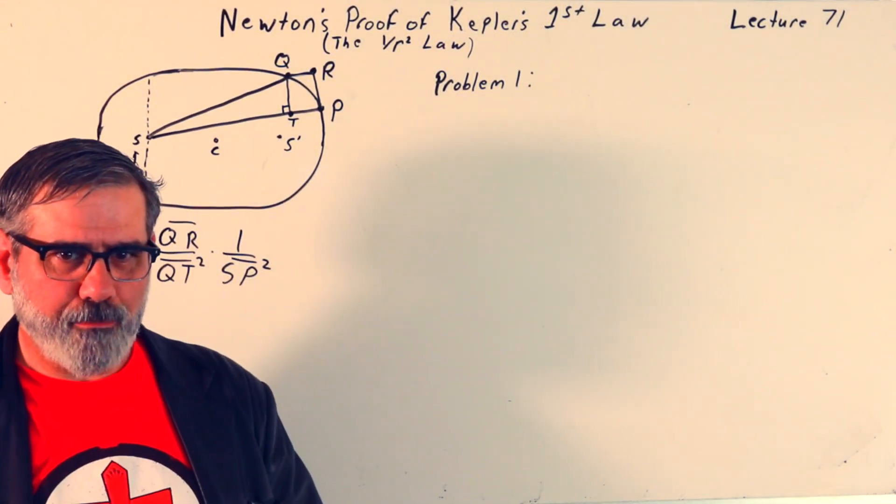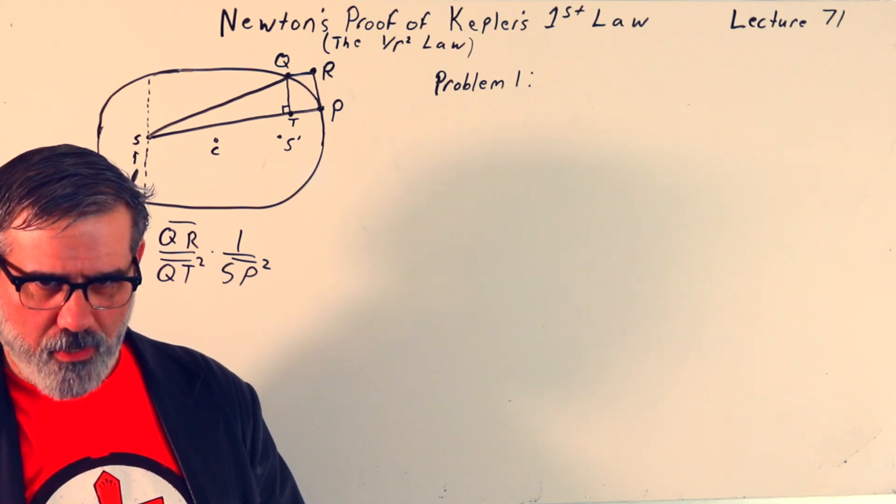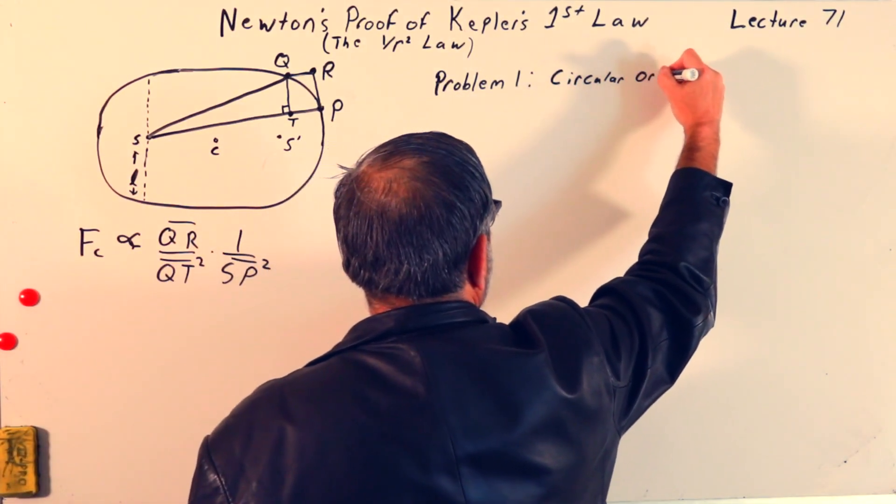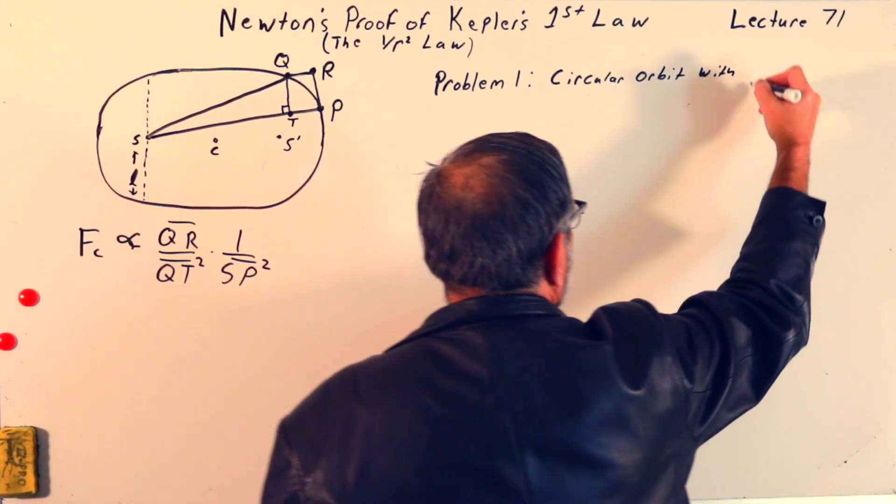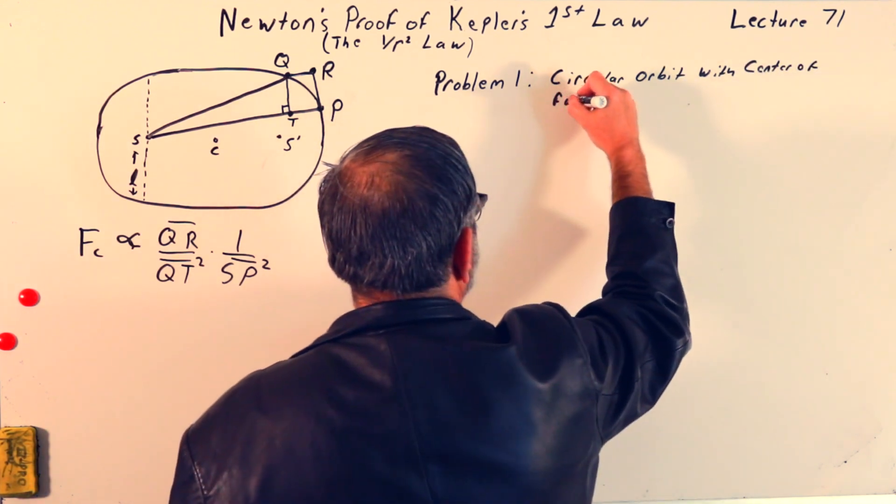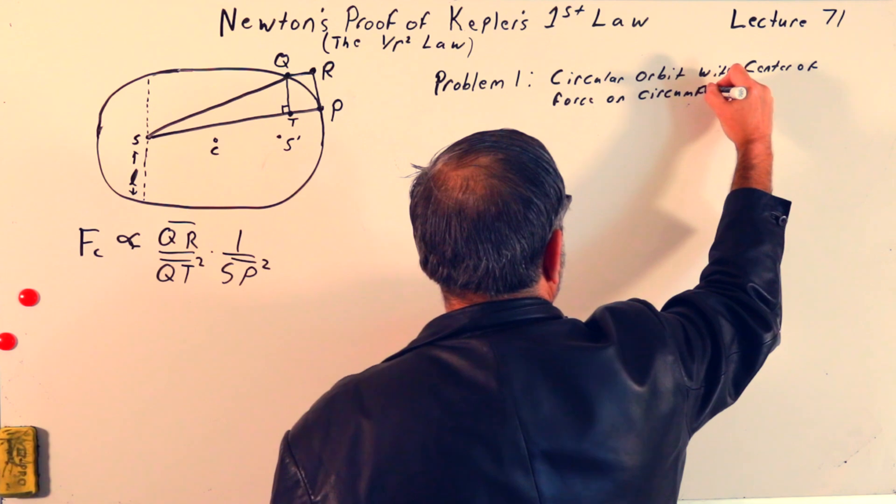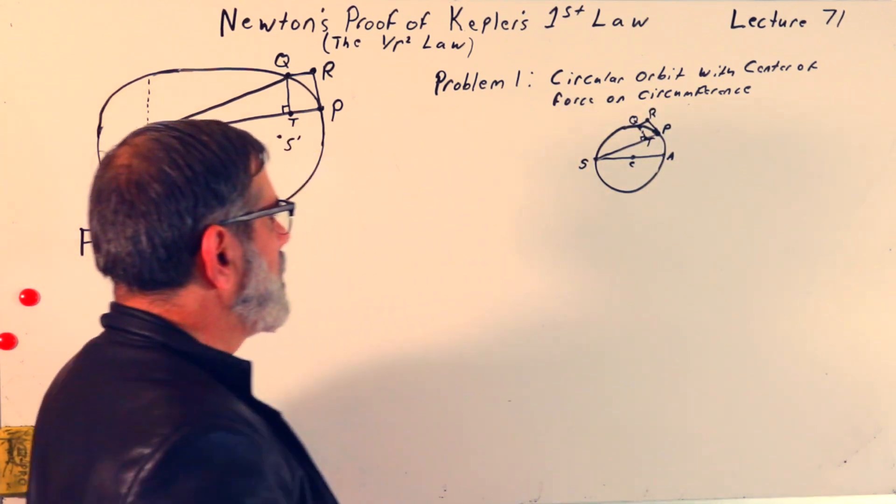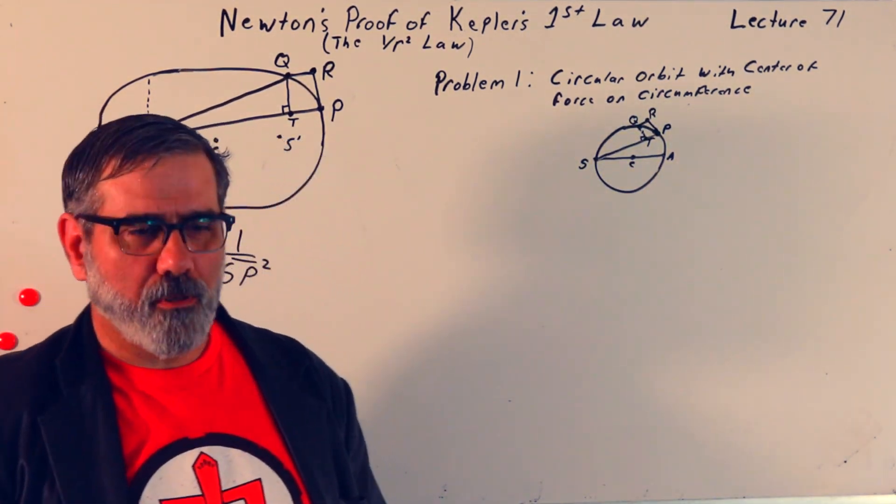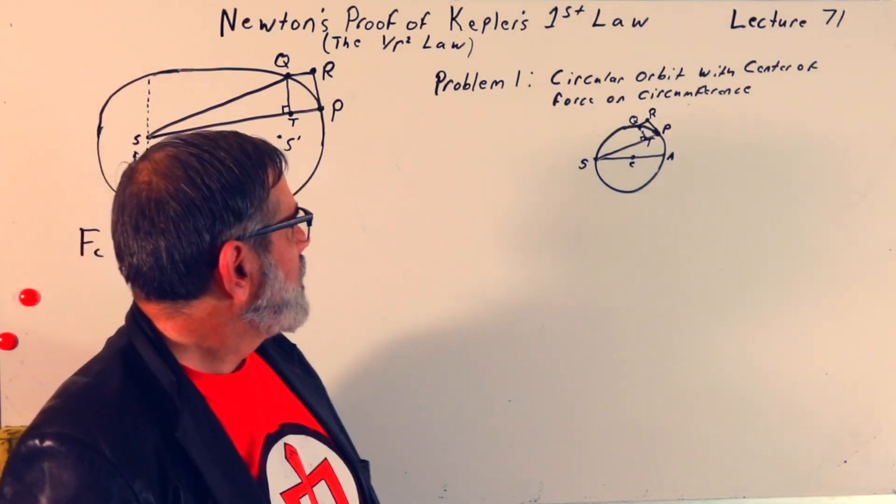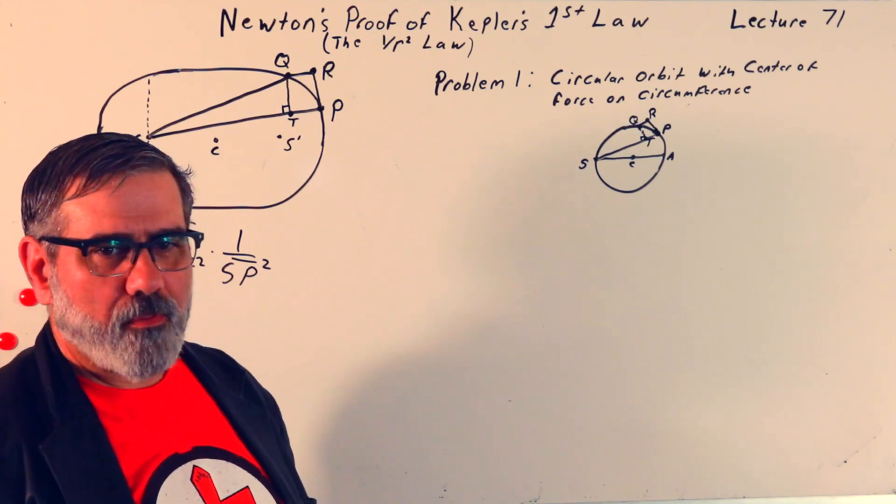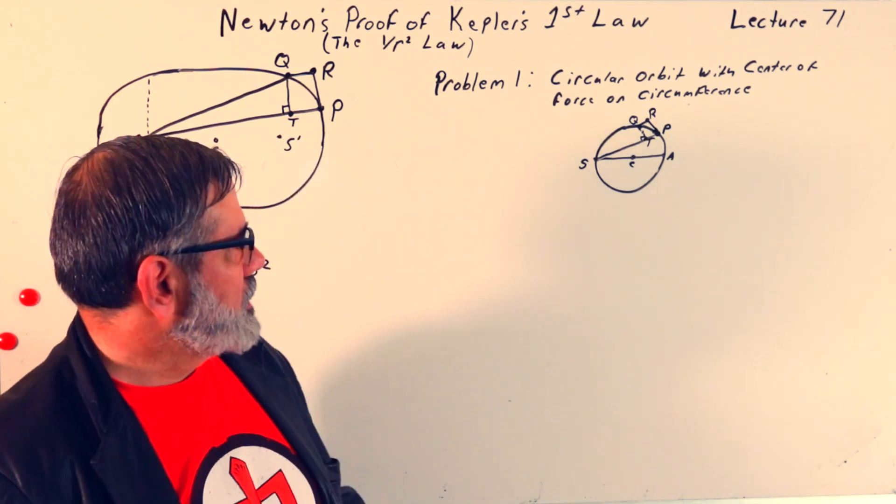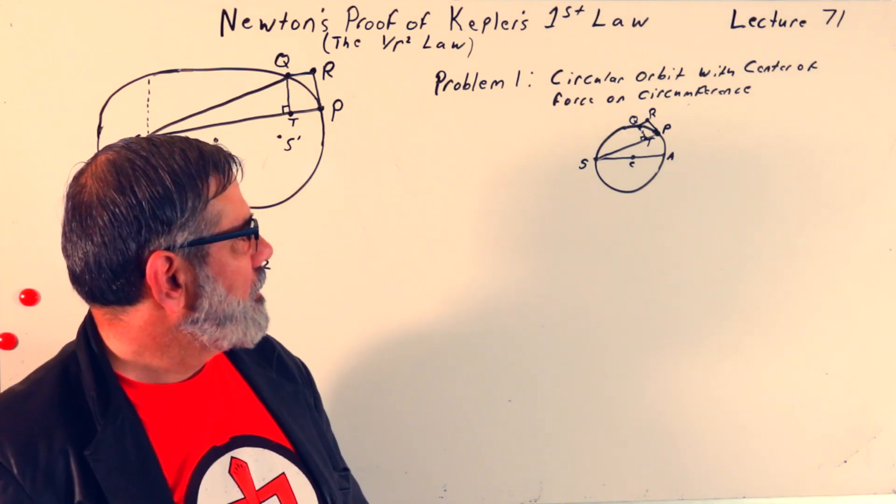So, Newton didn't just solve the Kepler situation. He actually went and did a bunch of hypothetical situations, and so problem 1 that he considered was, let me draw this, so it's a circular orbit with center of force on circumference. Here's a, probably too small a picture to see it, but we're not going to go through all the details. But, so, he wanted, for problem 1, he considered a circular orbit with the center of force on the circumference.